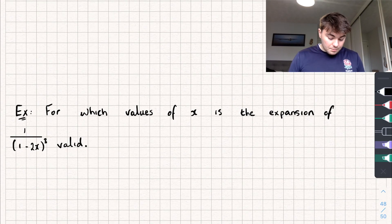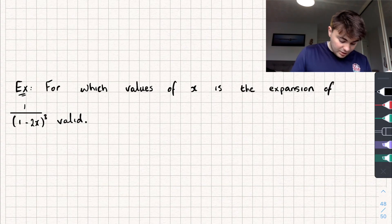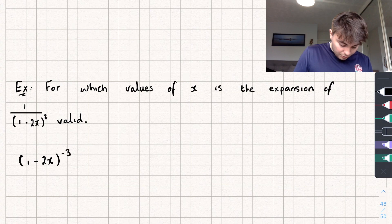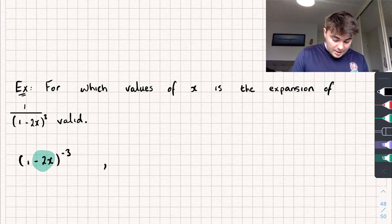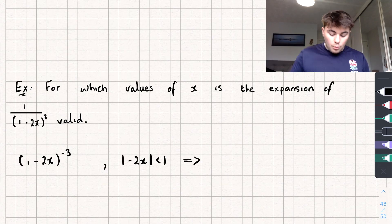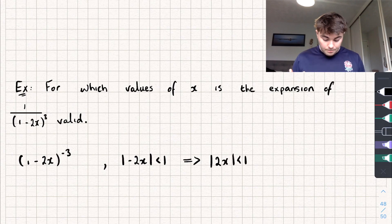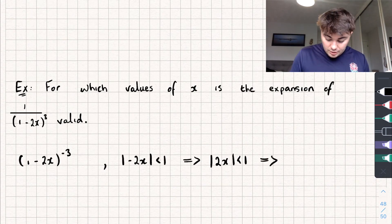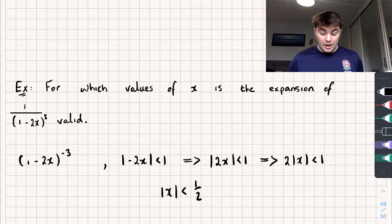The third example asks: for which values of x is the expansion of 1 over (1 − 2x) cubed valid? Rewriting as (1 − 2x) to the power of negative 3, rather than a plus x we've got minus 2x. So inside the modulus we write negative 2x, strictly less than 1. Since negatives turn positive inside a modulus, this is the same as |2x| < 1, i.e., 2|x| < 1, so |x| < 1/2.